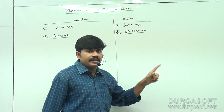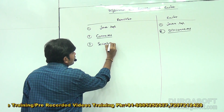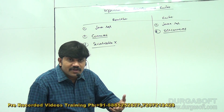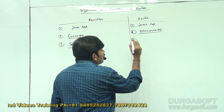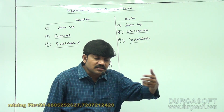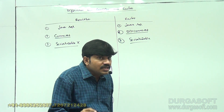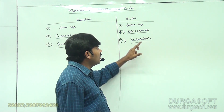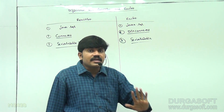Third point: ResultSet is not serializable by default. You can't send your ResultSet object across the network. But by default, except JdbcRowSet, all the remaining RowSets are serializable. JdbcRowSet is not serializable and not disconnected — except JdbcRowSet, all the remaining are disconnected and serializable.